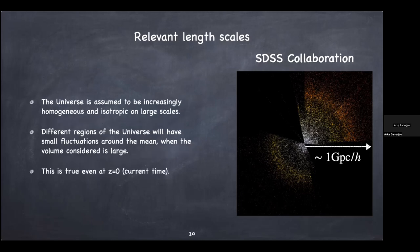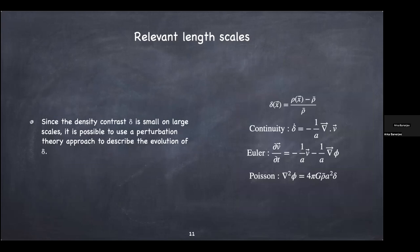Even today at redshift zero, the universe is still close to being homogeneous and isotropic on large scales. There's a parameter called the overdensity parameter delta, which is the density at a given point minus the mean density divided by the mean density — guaranteed to be small on large scales. If delta is small, that gives you an expansion parameter and physicists can do linear perturbation theory, writing down equations that govern the evolution of these small fluctuations.